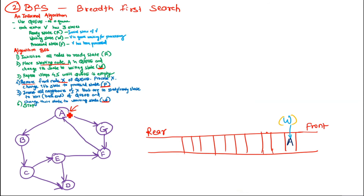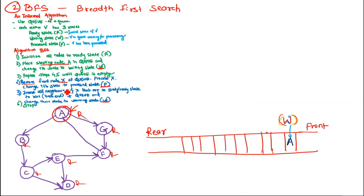The algorithm is: Step 1 — initialize all nodes to ready state. Step 2 — place starting node A in the queue and change its state to waiting state. Step 3 — repeat steps 4 and 5 until the queue is empty. Step 4 — remove the front node of Q, process that node, and change its state to process state.